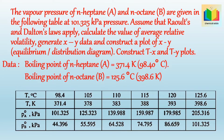Data: The boiling point of N-heptane (A) equals 371.4 Kelvin, or 98.40 degrees Celsius. The boiling point of N-octane (B) equals 125.6 degrees Celsius, or 398.6 Kelvin.